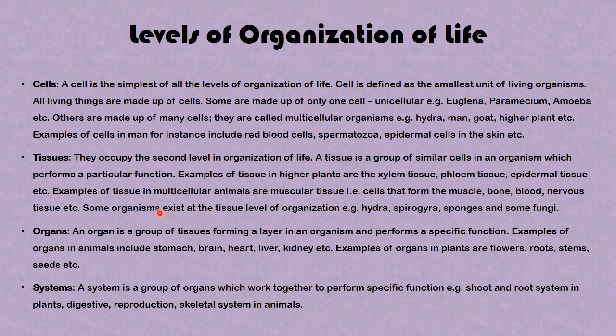The next level of organization is the organs. An organ is a group of tissues forming a layer in an organism and performs a specific function. Examples of organs in animals include the stomach, brain, heart, liver, kidney, and so on. Examples of organs in plants are flowers, roots, stems, seeds, and so on.